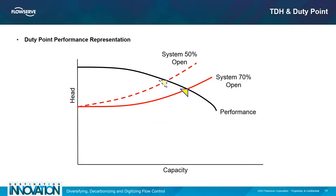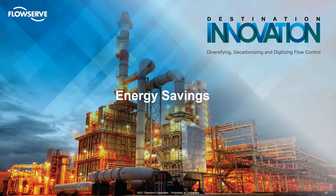Say the pump performance is characterized by the black curve, and the system curve is given in red. If the discharge control valve is throttled to 50% open, then the friction required would increase and the pump would operate farther back on its curve, as represented by the hatched line. If throttling is excessive, there may be a tremendous amount of wasted energy manifesting as damage to the pump and its system.